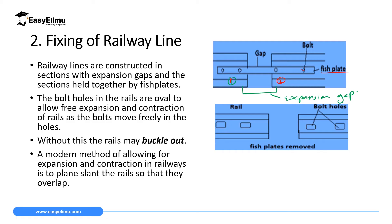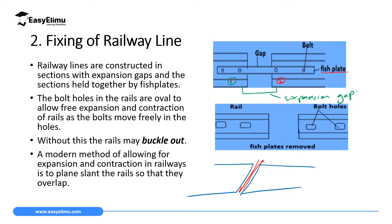Without these two features — oval-shaped holes which allow bolts to move freely, and the expansion gap — the rails are likely to buckle out. For modern construction of railway lines, they use slanting planes, where the first and second rail are placed in a slanting position so that when there is an increase in temperature they can expand and slide off, and when there is a decrease in temperature they can also slant off, reducing buckling of railway lines.